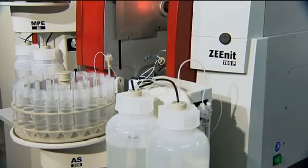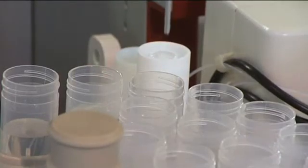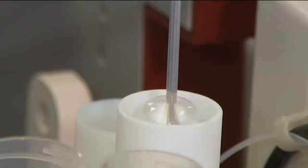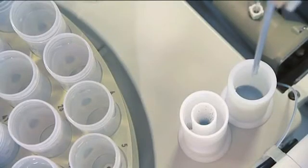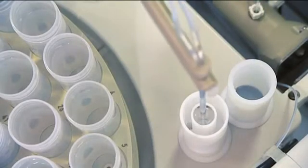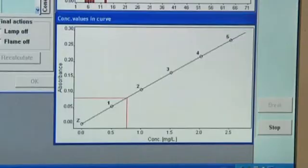The preparation of a series of standards with the autosampler with dilution function becomes child's play. You specify the number and concentrations of the standards and the sampler does the rest. The intelligent dilution function automatically dilutes samples which overshoot the calibration range by the appropriate factor.